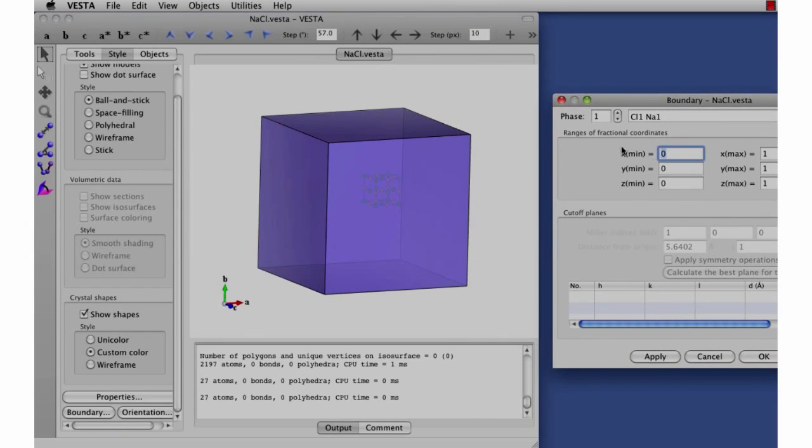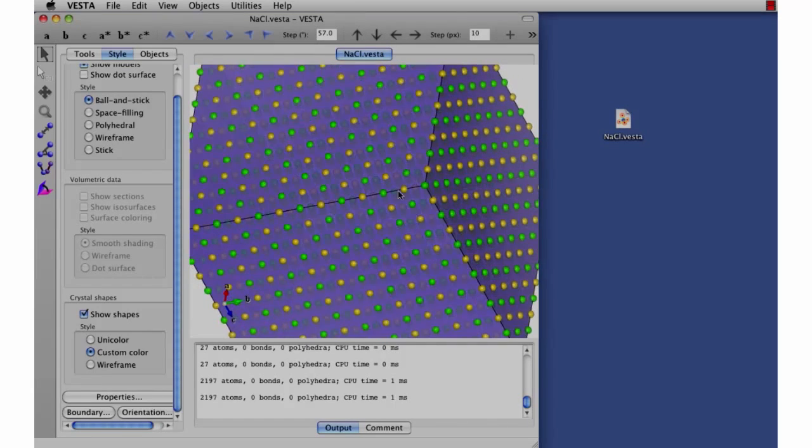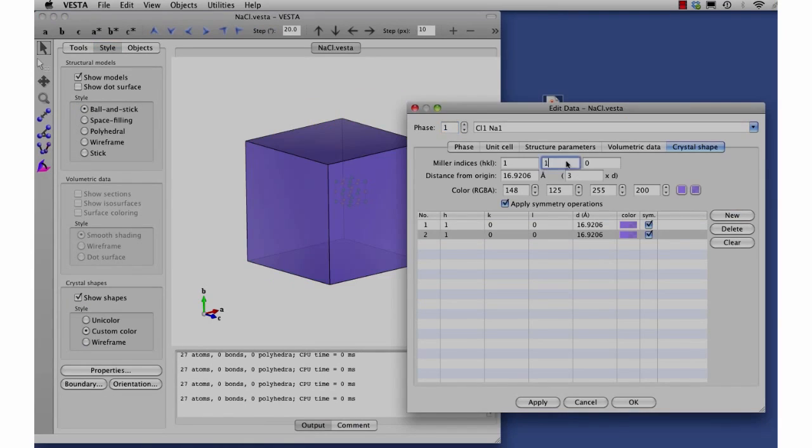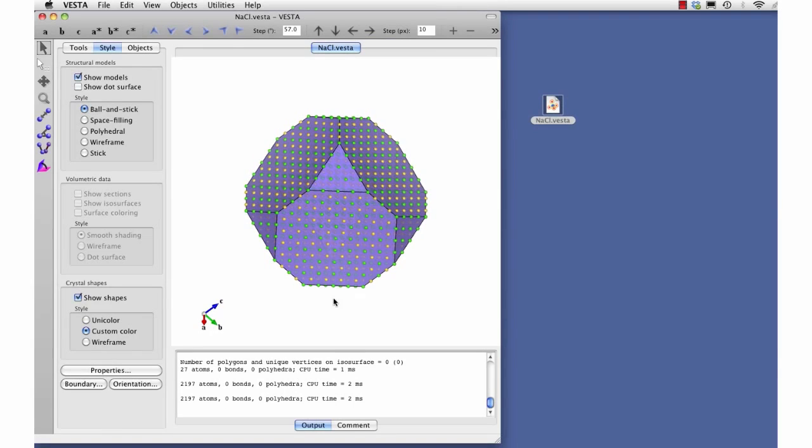So we could change the boundary to see which atoms are at the surface. And here we go. It's rare for a crystal to have just one low-energy face. Let's add a face that truncates this cube. Once again, we can see what atoms are at the surface.